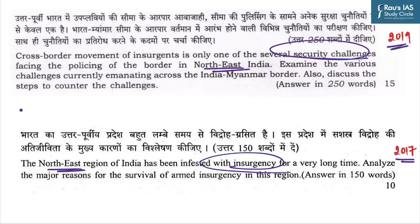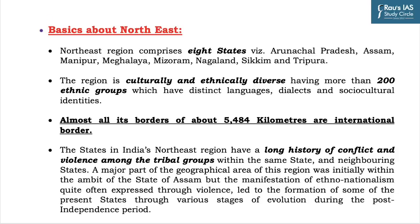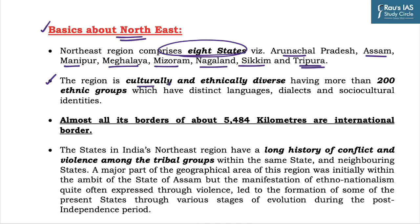In today's discussion, we will analyze the different aspects of the internal security challenge with respect to North East. This region comprises eight states: Arunachal, Assam, Manipur, Meghalaya, Mizoram, Nagaland, Sikkim, and Tripura. It is a culturally and ethnically diverse region with more than 200 ethnic groups, each having distinct languages, dialects, and socio-cultural identities.